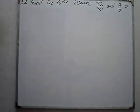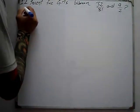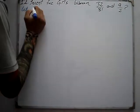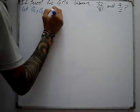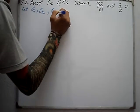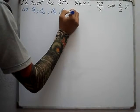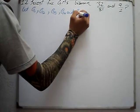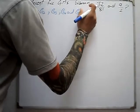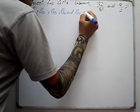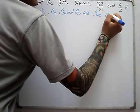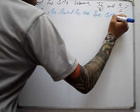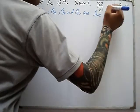So let's start. Let G1, G2, G3, G4, and G5 be the 5 geometric means to be inserted between the two given values.